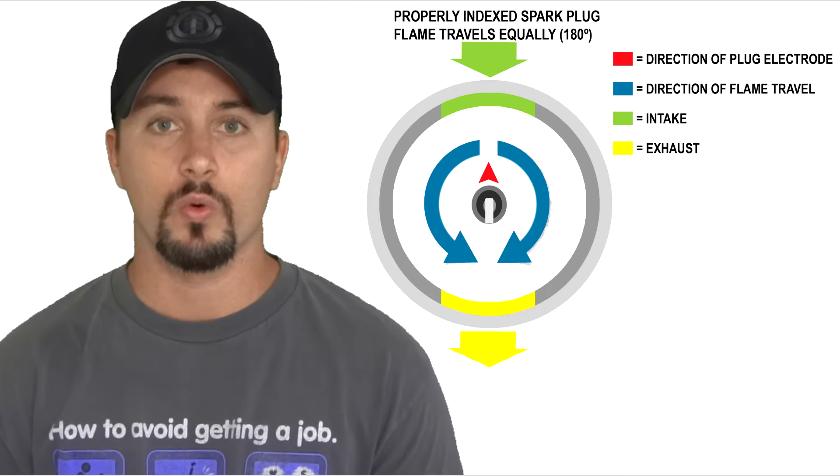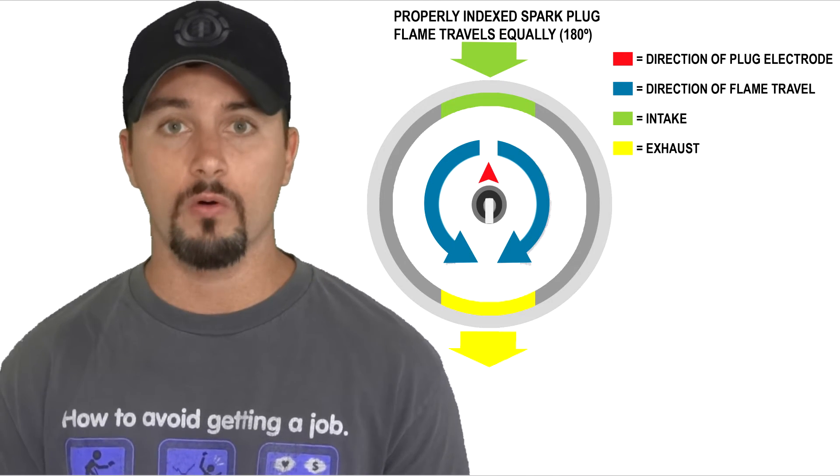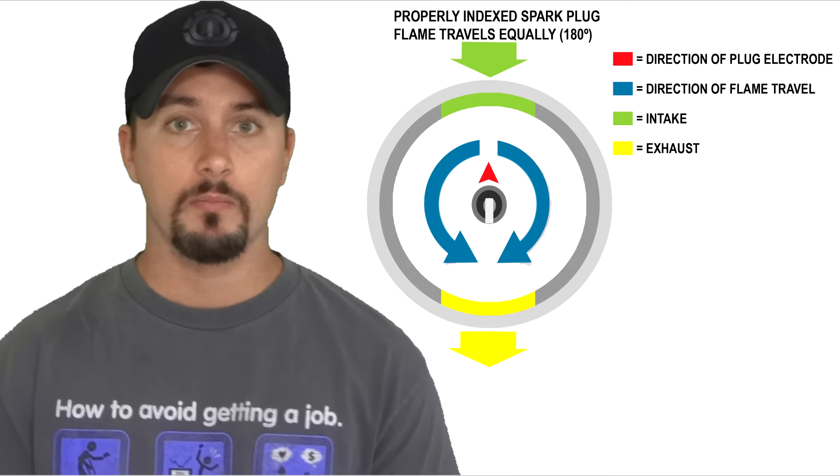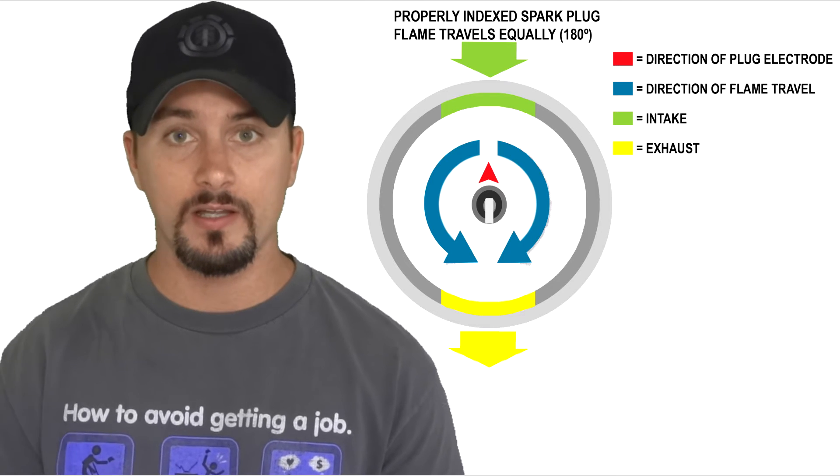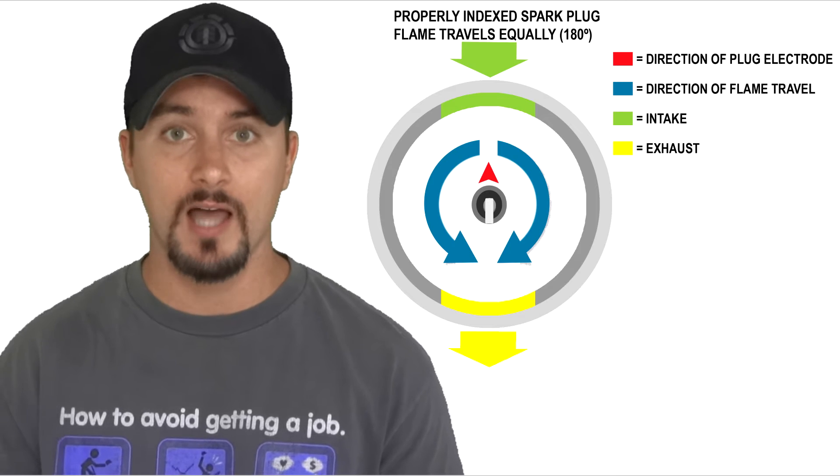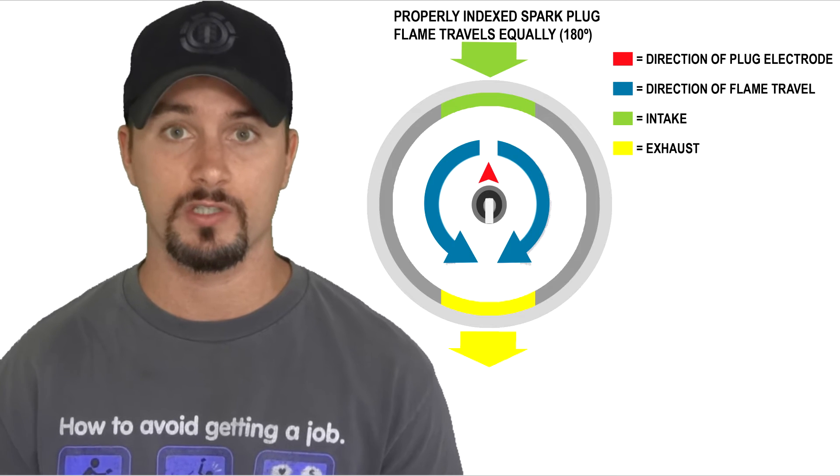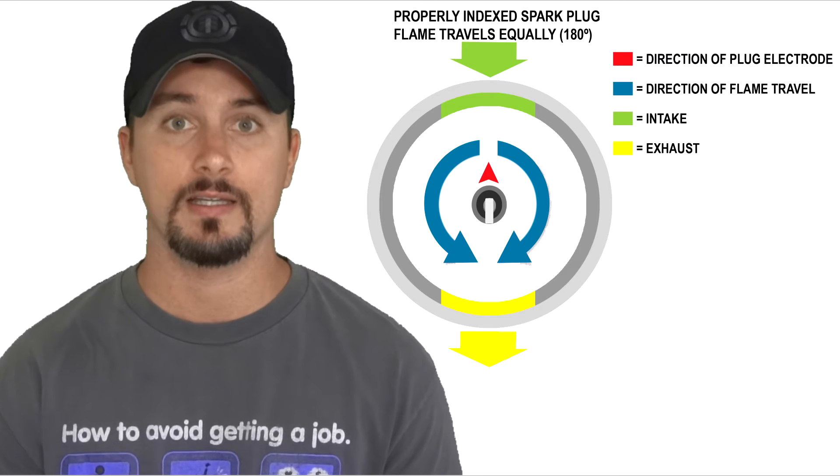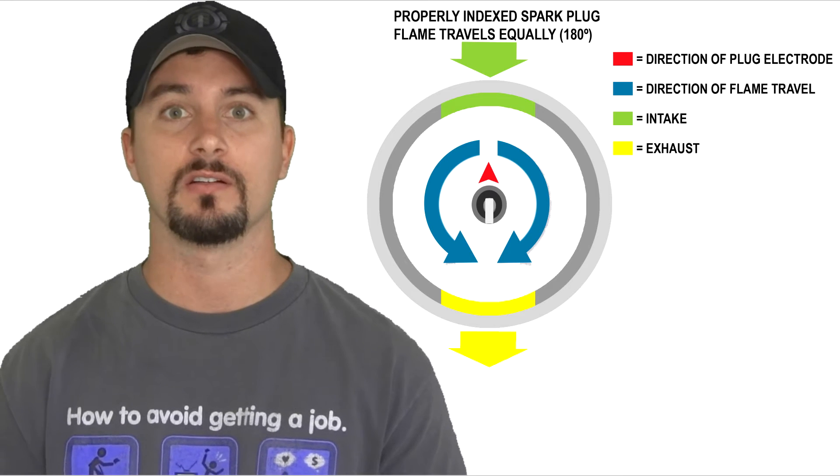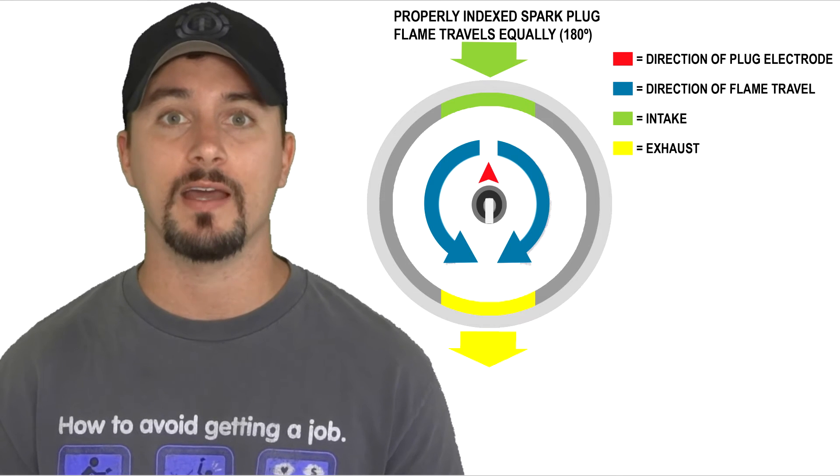So when you put the spark plug inside the hole, you're going to go ahead and mark the socket and turn it until you get the line on the socket that you drew with a Sharpie towards the intake or the fuel injector. And that's how you properly index your spark plug. Also, one more quick tip: